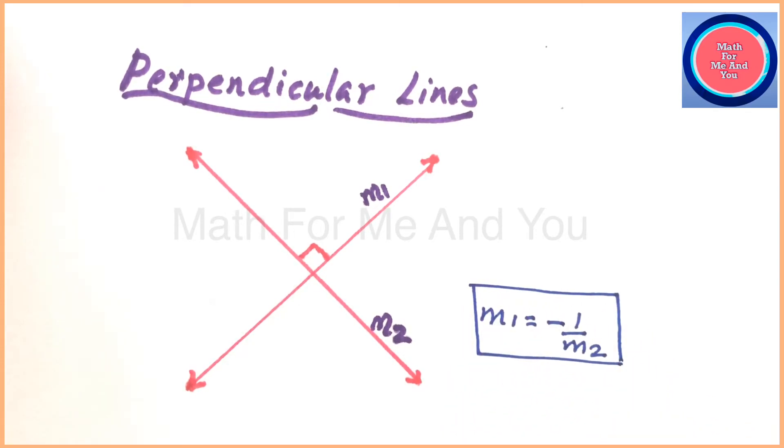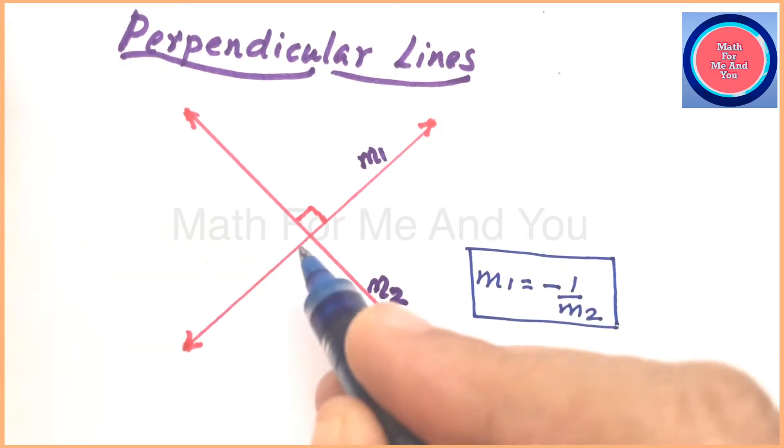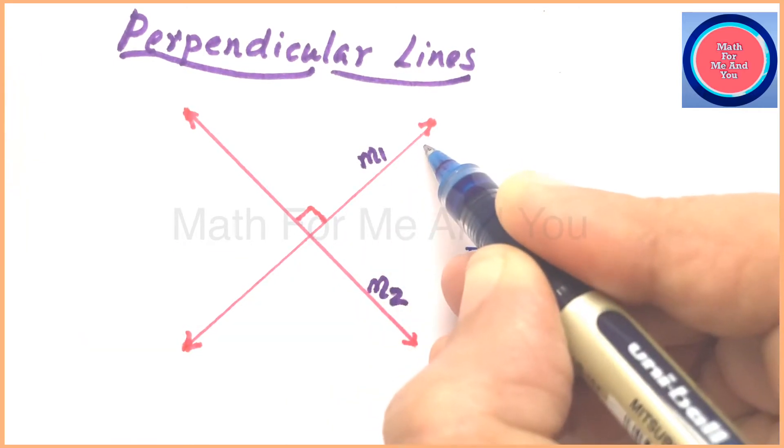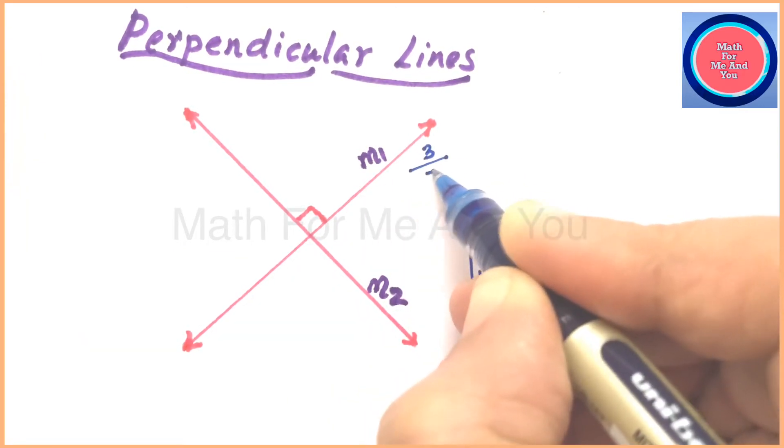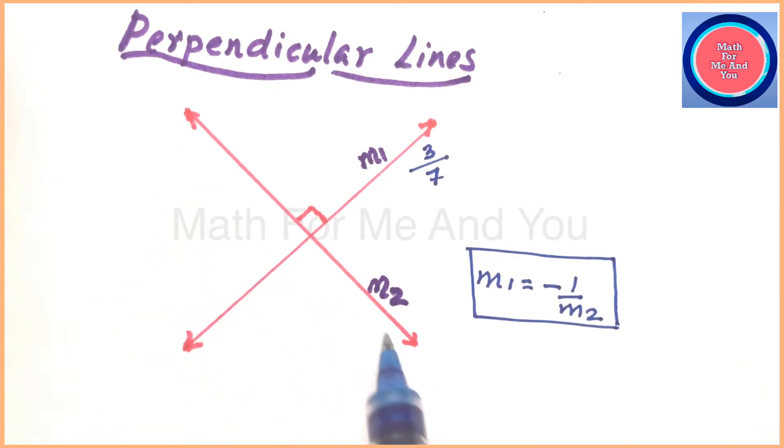With an example we can show this. If m1 is 3 over 7, then what about m2? m2 will be negative and reciprocal, so we put negative first, then numerator and denominator change, and we get minus 7 over 3. In this equation m1 equals minus 1 over m2, if we move m2 to the left side, it becomes m1 times m2. What is on the right side? It equals minus 1.